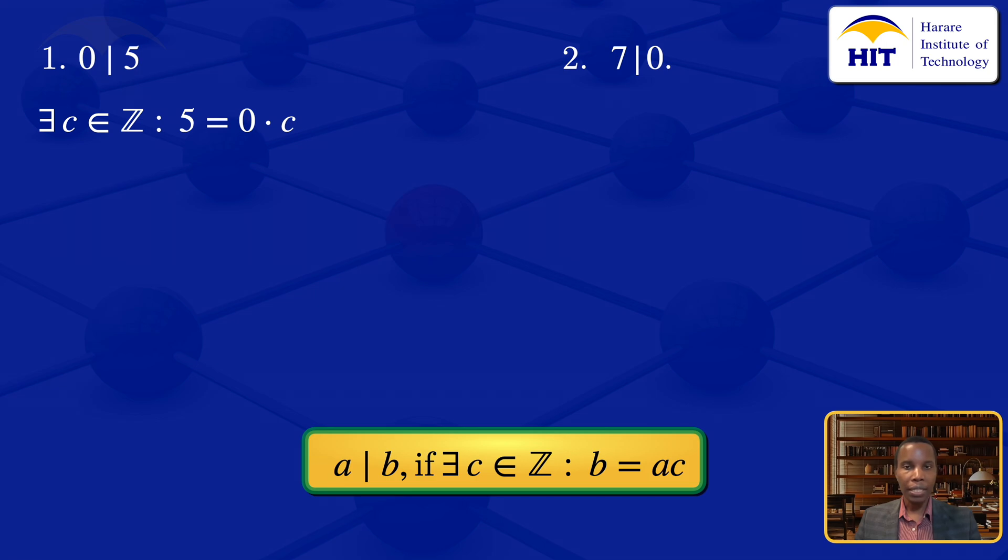But we don't have an integer C which when you multiply it by 0 gives us 5. So this one here is not true, we don't have an integer C existing.